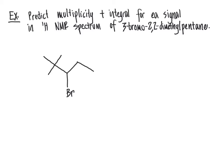In this example problem, we are asked to predict the multiplicity and the integral for each signal expected in an NMR spectrum of 3-bromo-2,2-dimethylpentane. I strongly encourage you to hit pause and try to work through this on your own, then check your work by hitting play. I have gone ahead and drawn the structure of 3-bromo-2,2-dimethylpentane. The first thing we need to do is recognize how many signals there will be by picking out protons that are symmetrical to one another, since those will appear as a single signal.